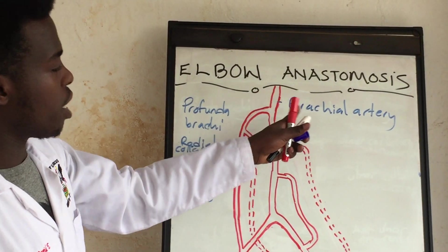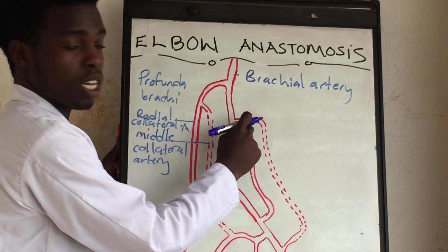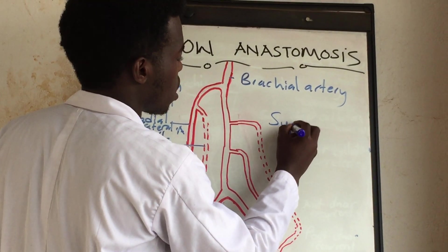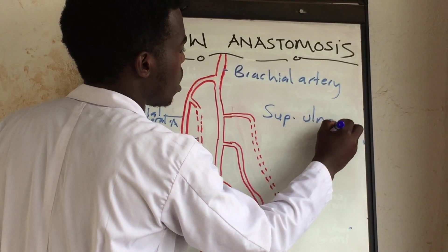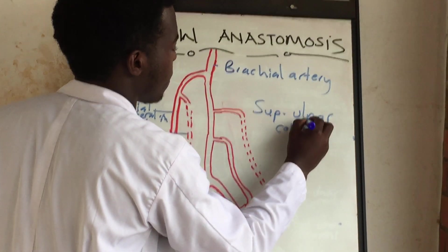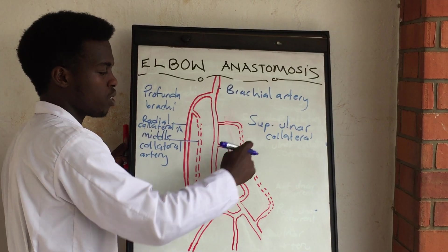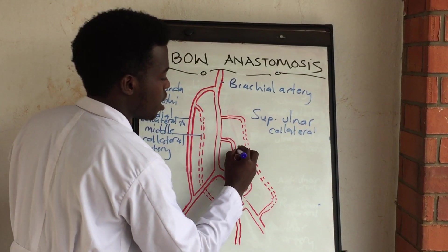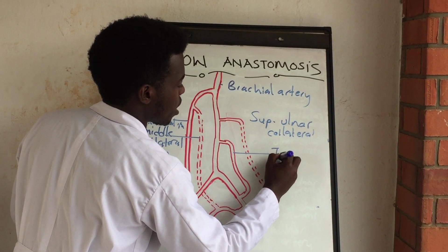The brachial artery continues to give off this other branch, which is the superior ulnar collateral artery. Then there is another branch which is the inferior ulnar collateral artery.